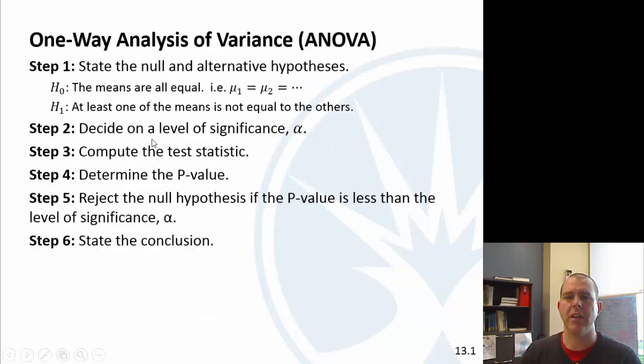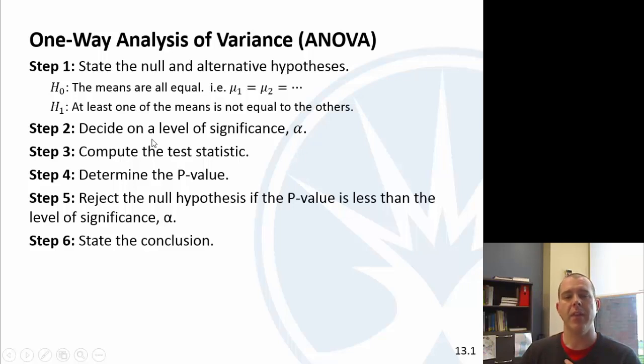The null hypothesis is that all the means are the same — much like the proportions test — and then the alternative is that at least one mean is not the same.